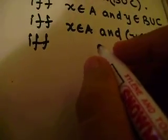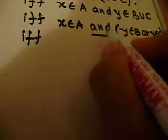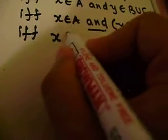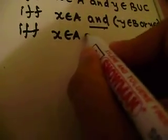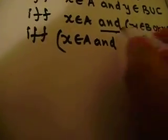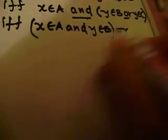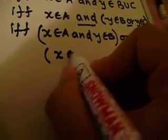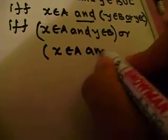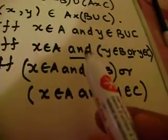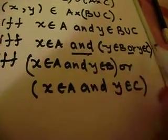Alright, moving quickly forward. At this point, we're going to distribute the and operator. So, we know that X belongs to A and Y belongs to B, or we know that X belongs to A and Y belongs to C. Again, what I've done is just distributed the and across the parentheses.